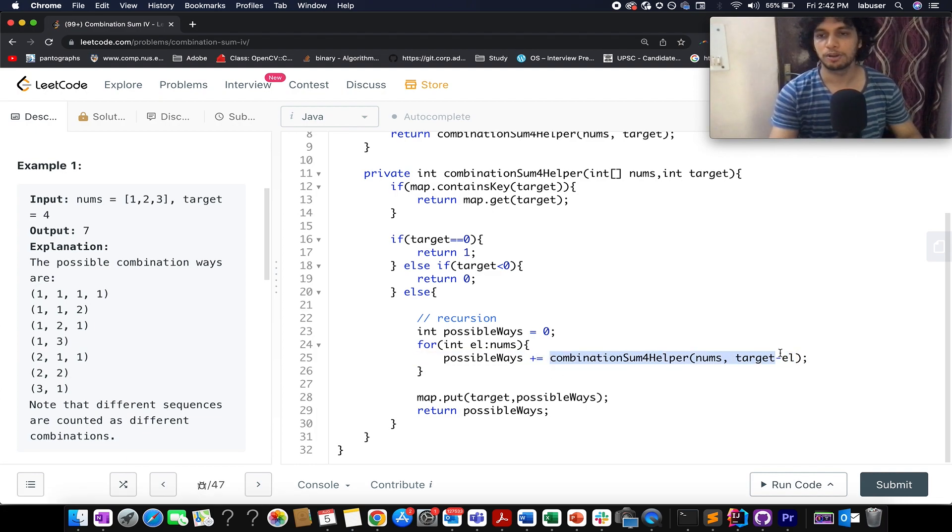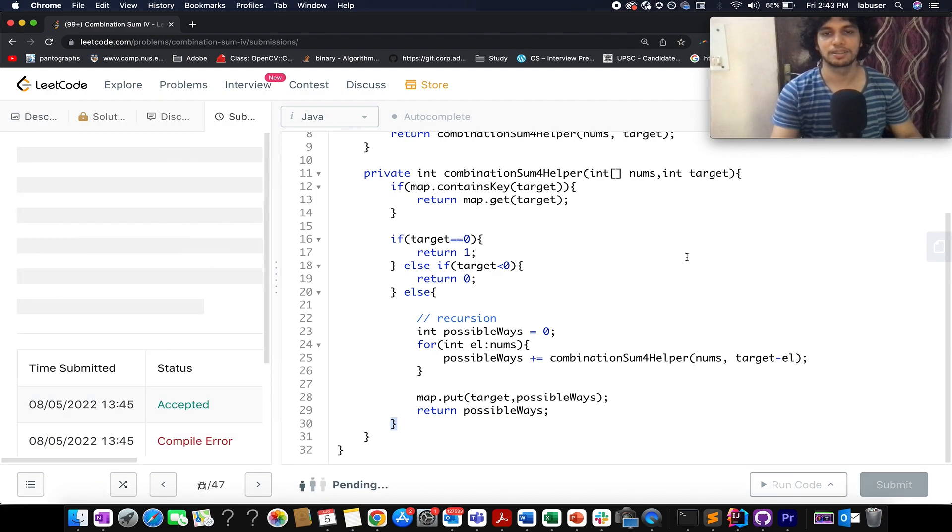And out of all the possibilities that are generated, I sum those in the possible value variable. Once I have calculated this value, what do we do? We simply put this value in the map and return the possible ways as the final answer. So let's try this up.